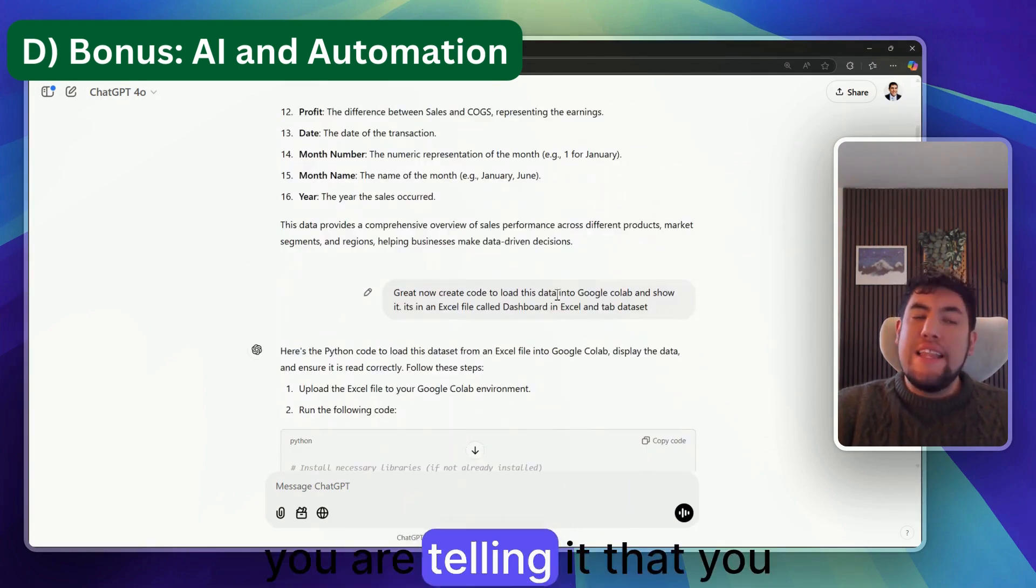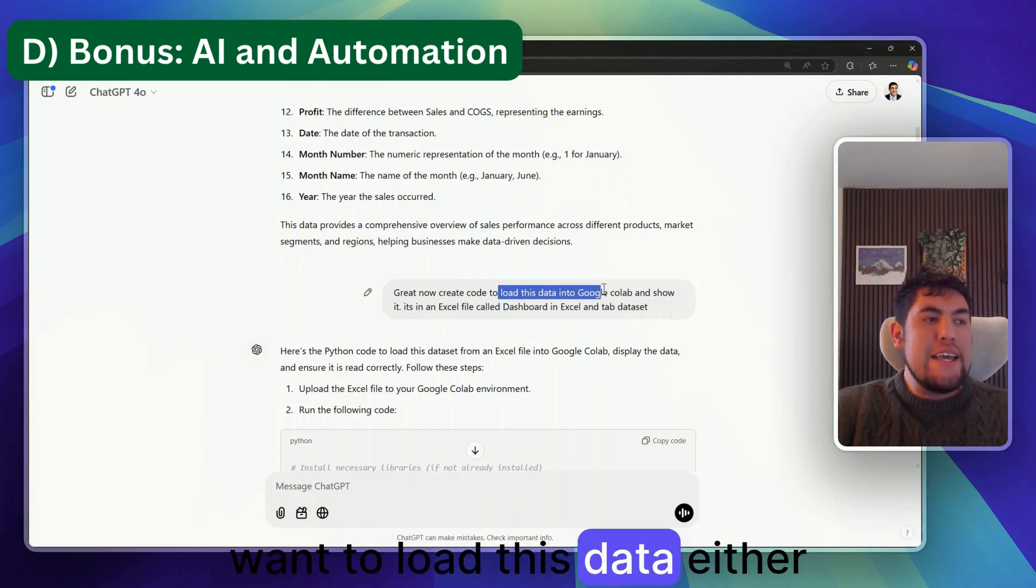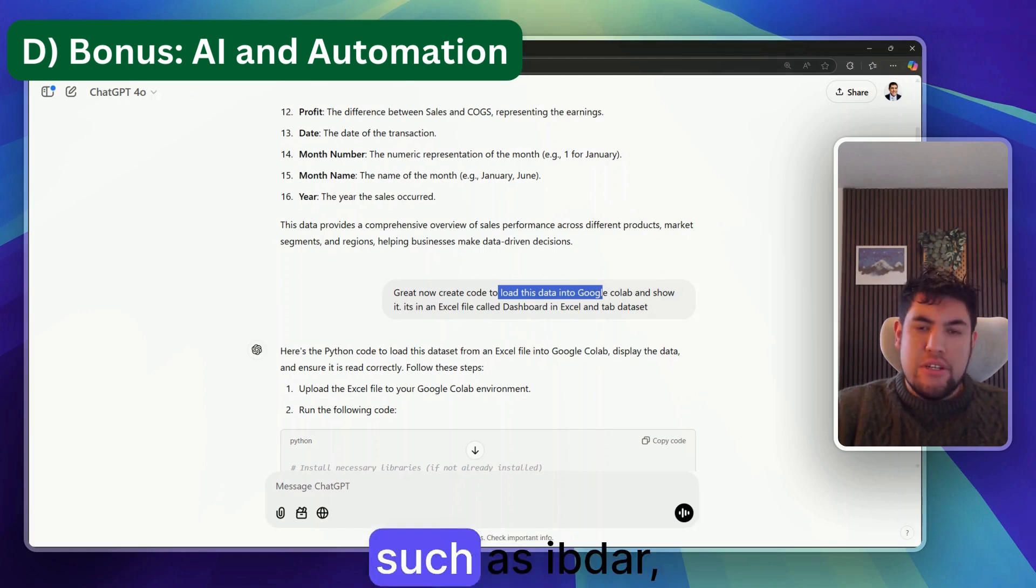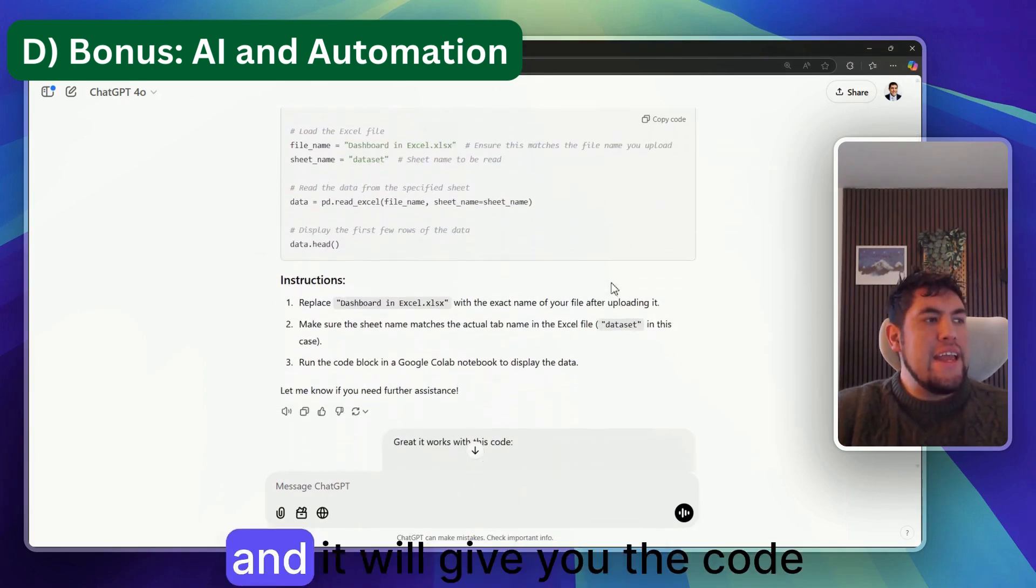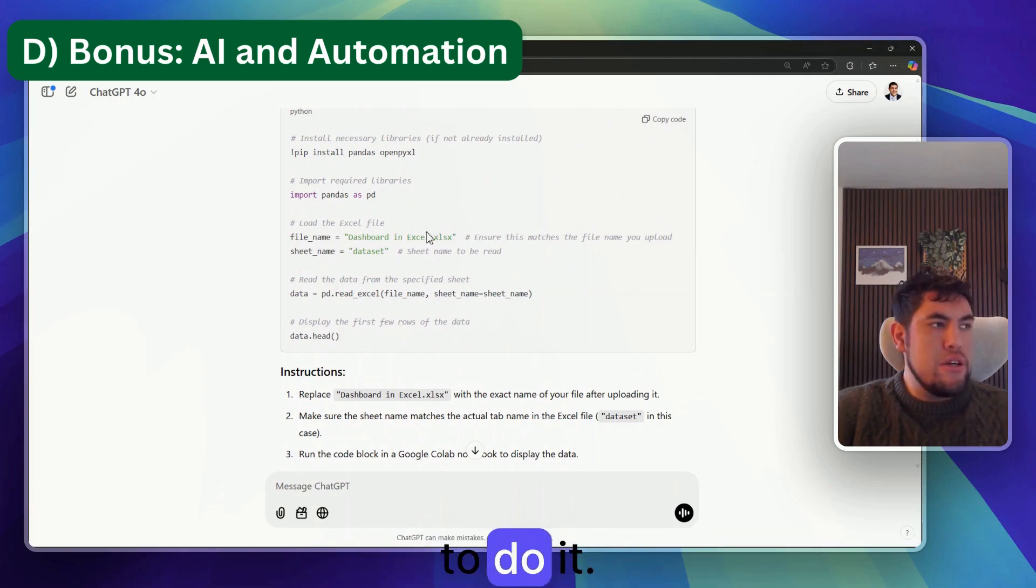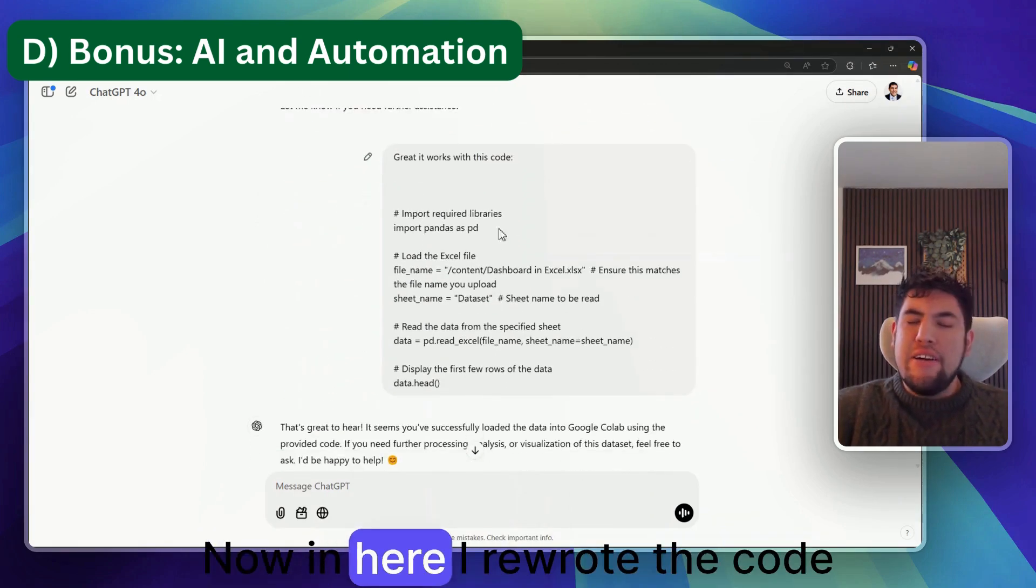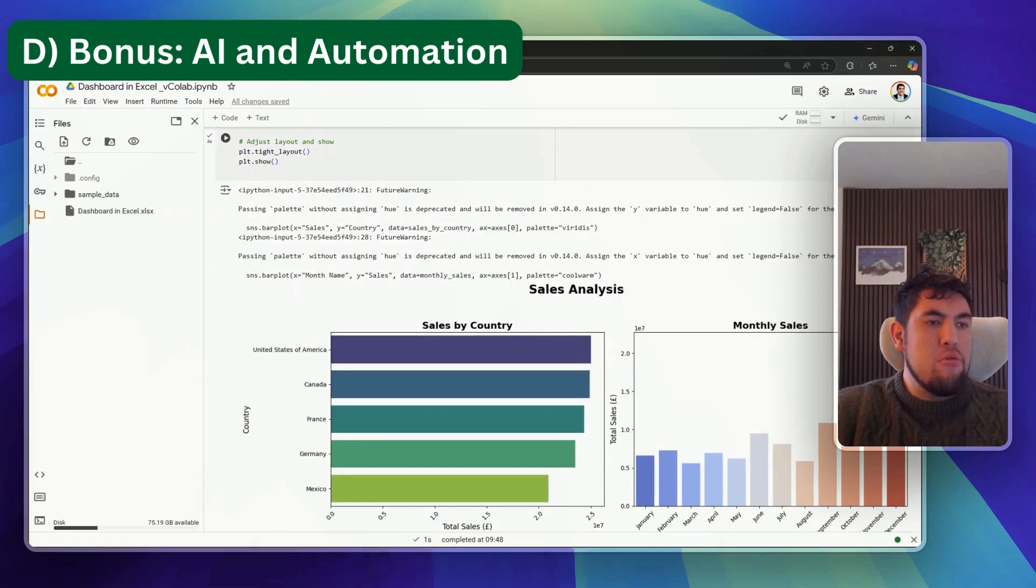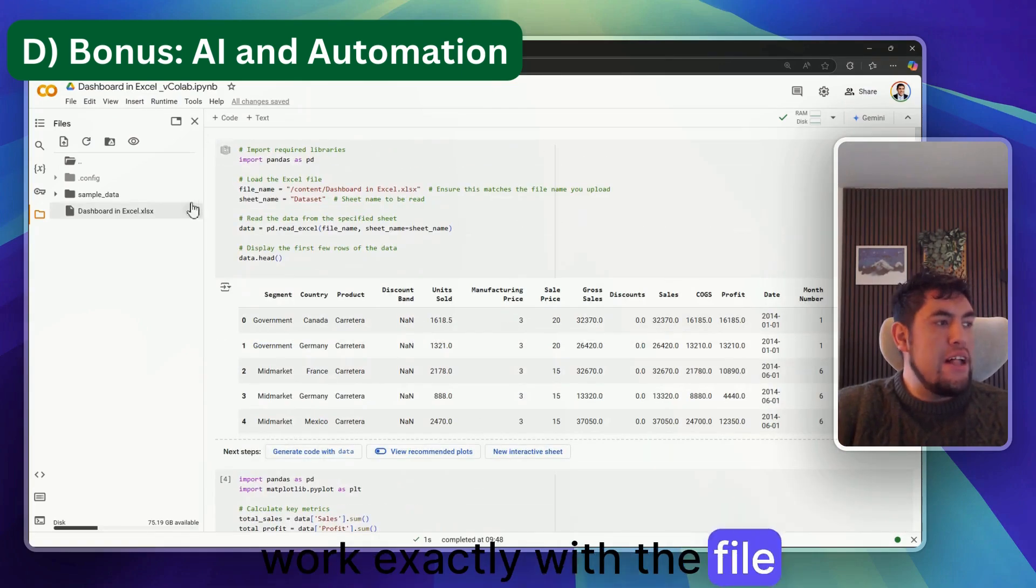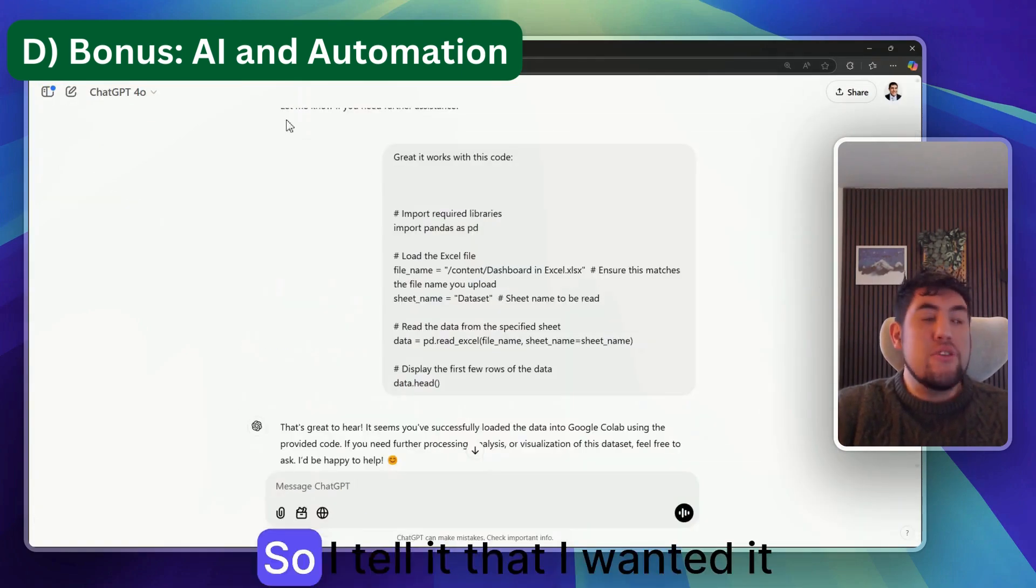Then you are telling it that you want to load this data either into Google Colab or into Excel, and it will give you the code to do it. In here I rewrote the code a little bit just to make it work exactly with the file structure that I had there.